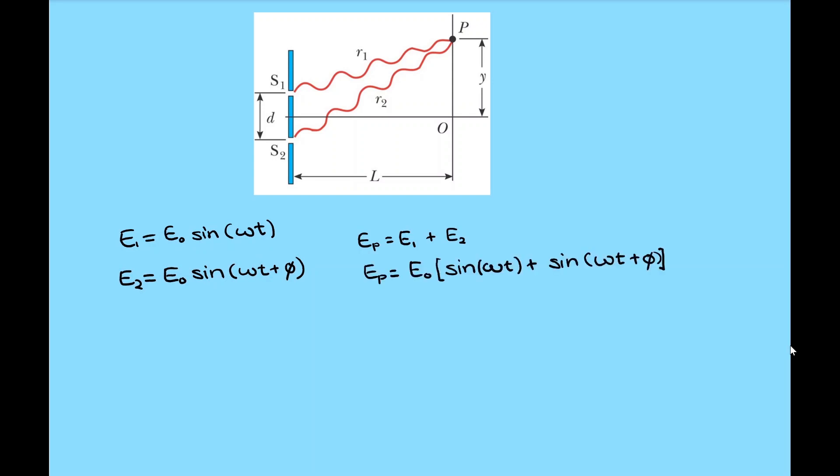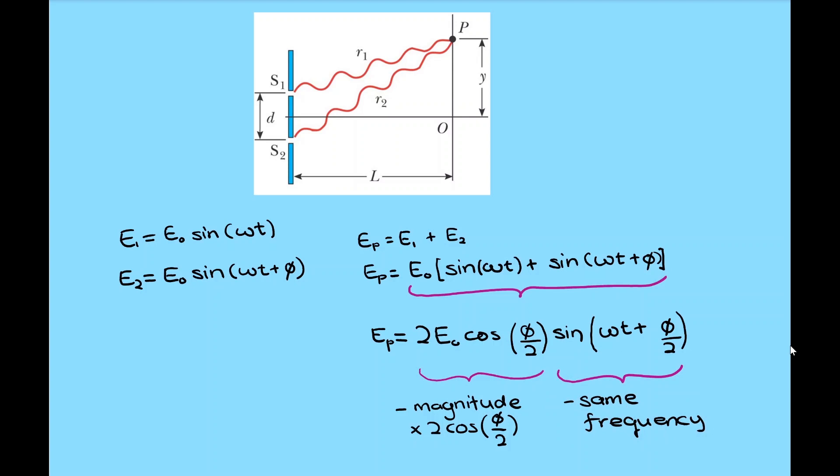By applying trigonometric identity, we have the following equation, where the first part provides the information on the magnitude of the resulting wave, and the later part reveals that it has the same frequency as the sources.